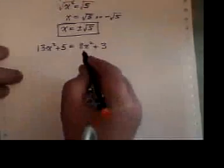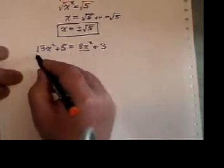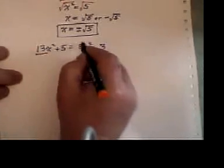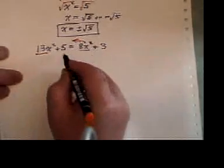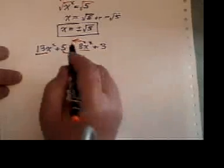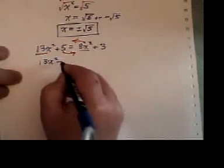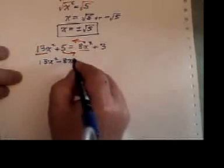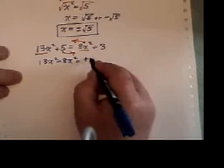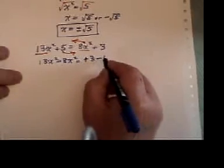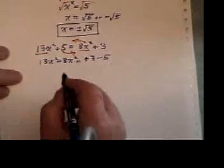This time we have x squareds on the right and x squareds on the left. So I'm going to bring the 8x squared across and the plus 5 across. On the left hand side I'll have 13x squared minus 8x squared. On the right hand side I'll have the plus 3 because it hasn't changed the side and a minus 5.